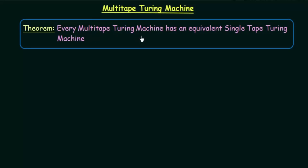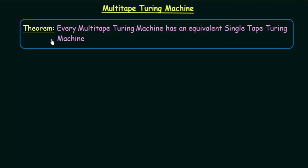That is what we are going to see in this lecture. We have a theorem which says: every multi-tape Turing Machine has an equivalent single tape Turing Machine. By equivalent, we mean that this single tape Turing Machine will be able to perform the exact same task, or recognize exactly the same language, as the multi-tape Turing Machine. We are not talking about speed or ease of computation — the multi-tape Turing Machine may be faster or easier to program — but what we are talking about is equivalence in power.